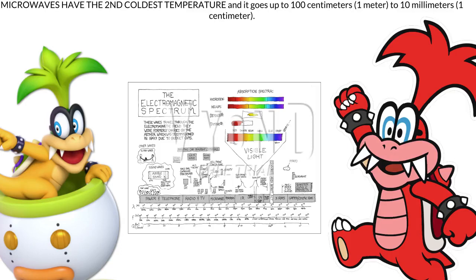Microwaves are widely used in modern technology, for example in point-to-point communication links, wireless networks, microwave radio relay networks, radar, satellite and spacecraft communication, medical diathermy and cancer treatment, remote sensing, radio astronomy, particle accelerators, spectroscopy, industrial heating, collision avoidance systems, garage door openers and keyless entry systems, and for cooking food in microwave ovens. Microwaves were first generated in the 1880s and 1890s in some of the earliest radio experiments by physicists who thought of them as a form of invisible light. James Clerk Maxwell in his 1873 theory of electromagnetism, now called Maxwell's equations, had predicted the existence of electromagnetic waves and proposed that light was composed of these waves.